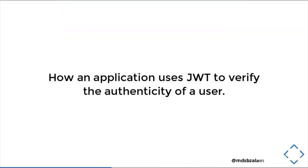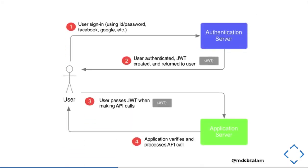Let us look at how an application uses JWT to verify the authenticity of a user. Once the user logs in to the authentication server using Facebook, Google, ID/password, or any login method, the user gets authenticated at the authentication server. JWT is created at the authentication server and returned to the user while redirecting back to the website. The user then passes the JWT with every API call to the application server, which verifies whether the JWT is legitimate using the secret and accordingly processes the API call. If it is legitimate, it gives access to the resource. If not, it returns an error.